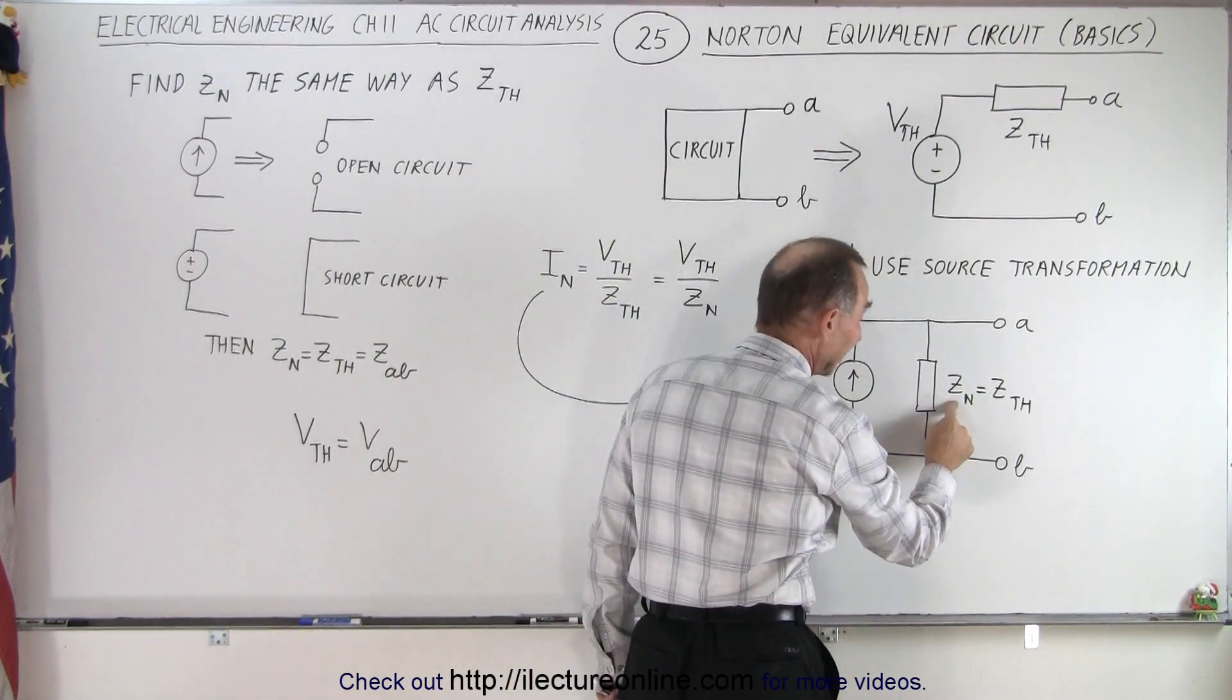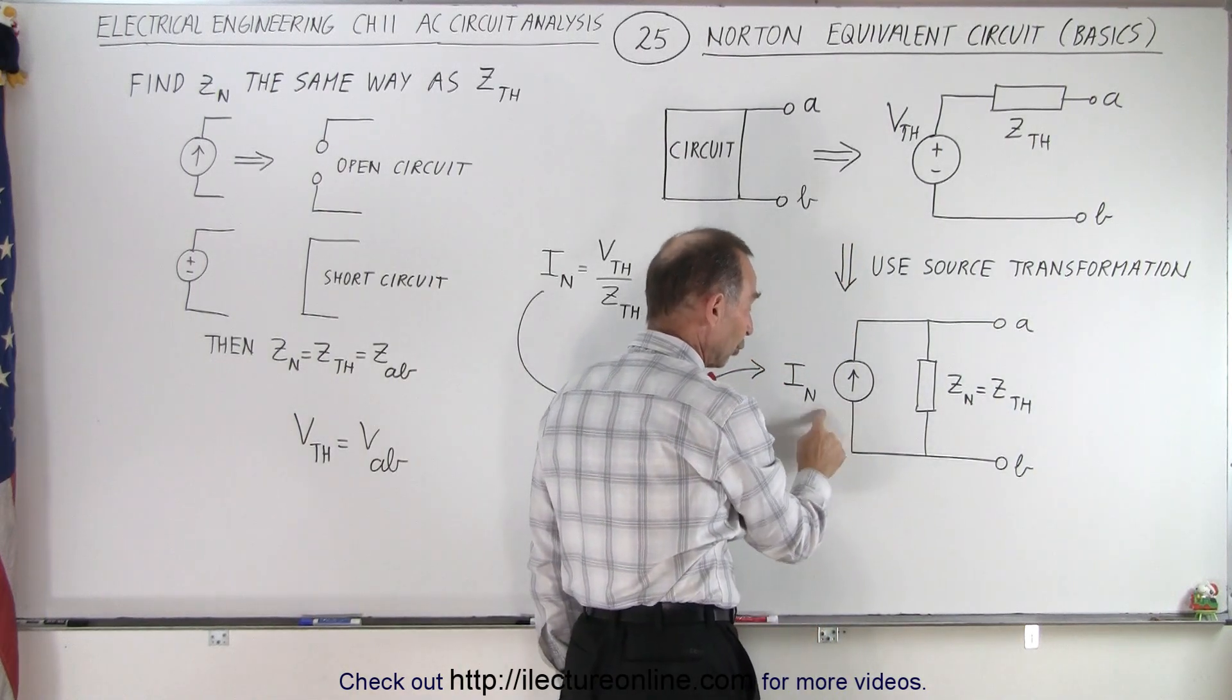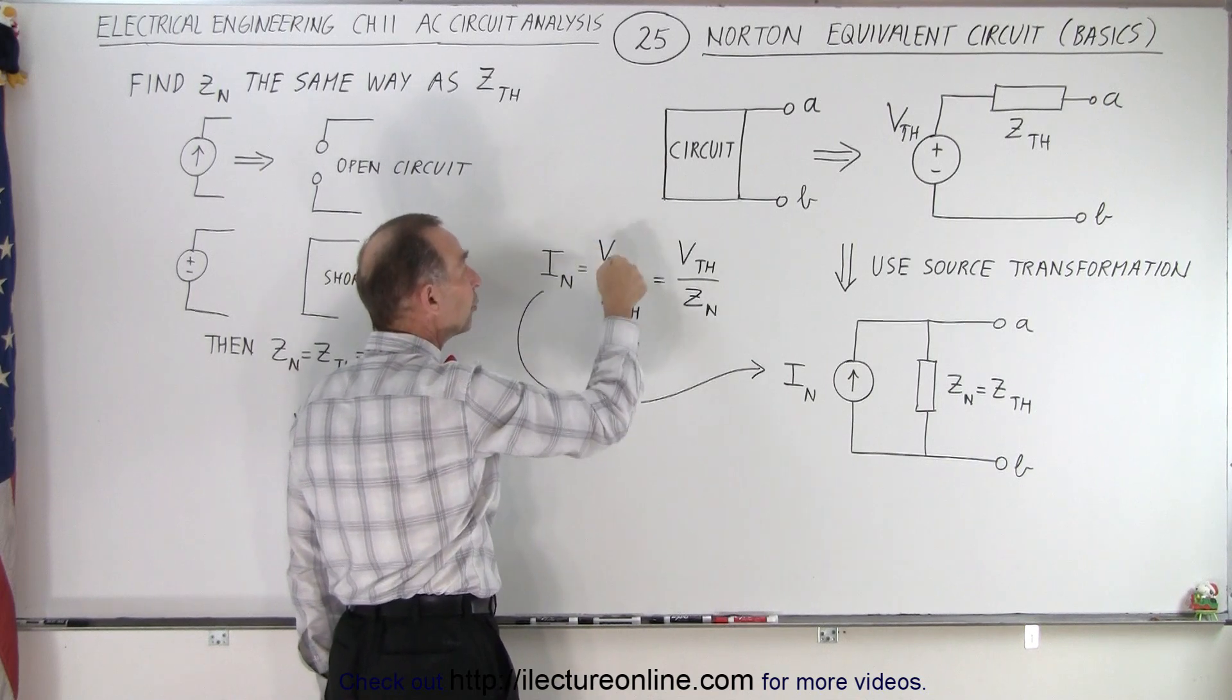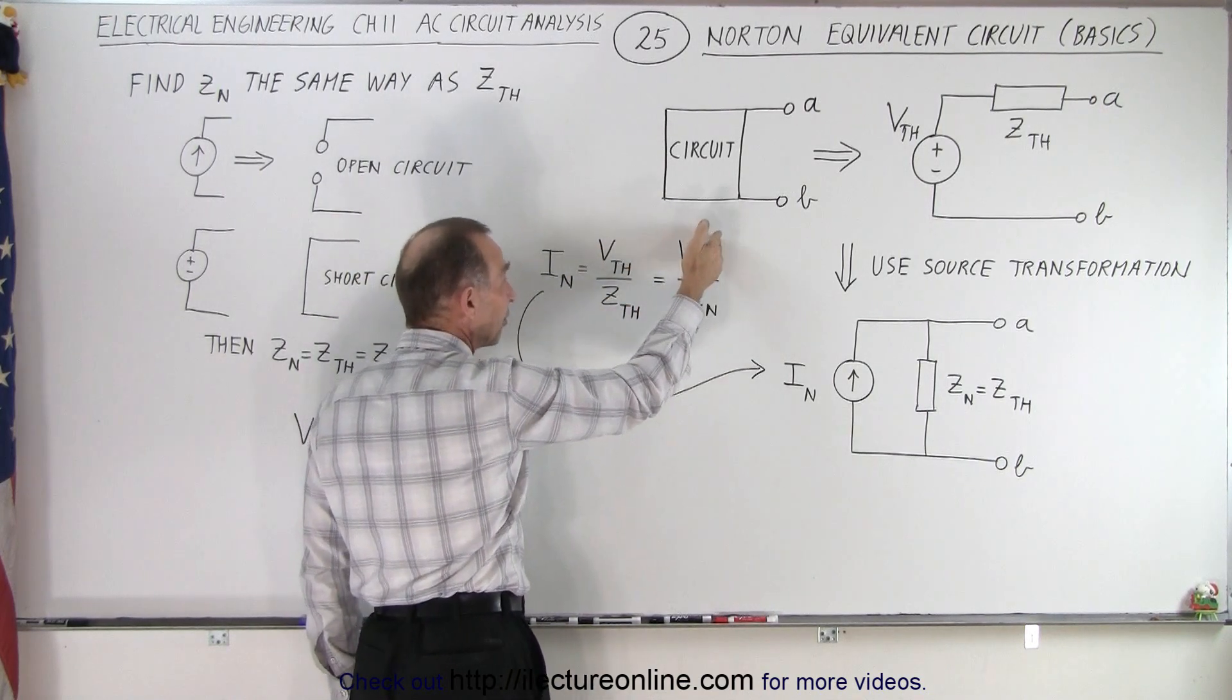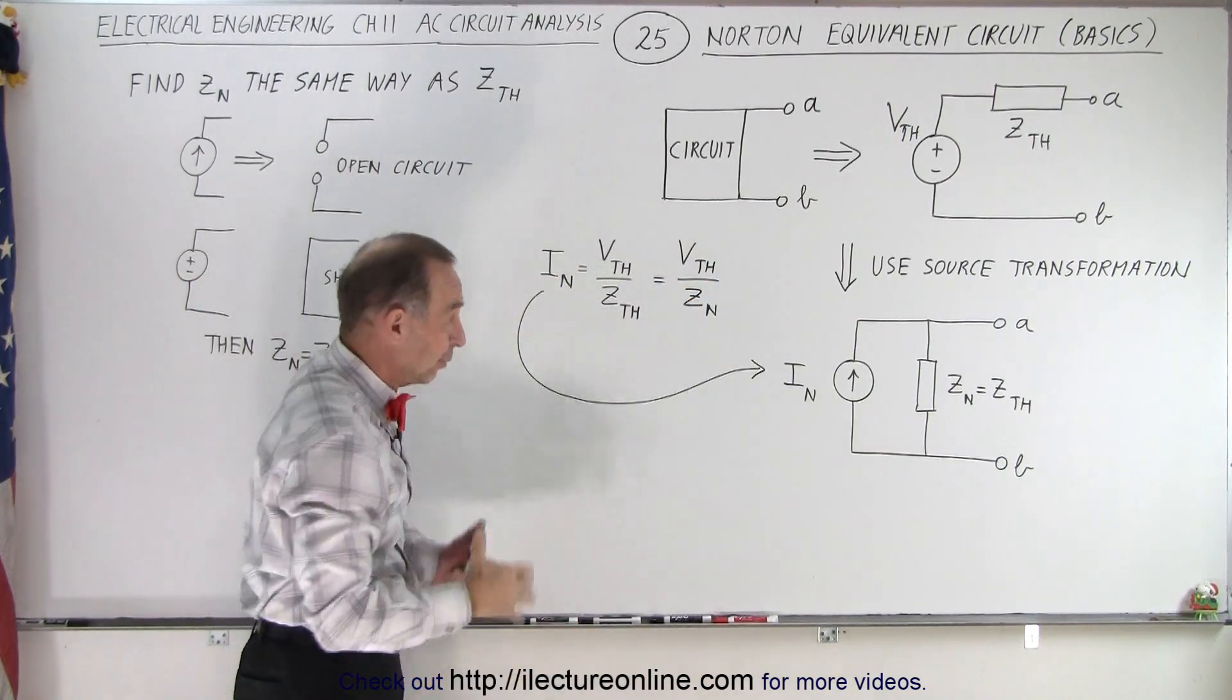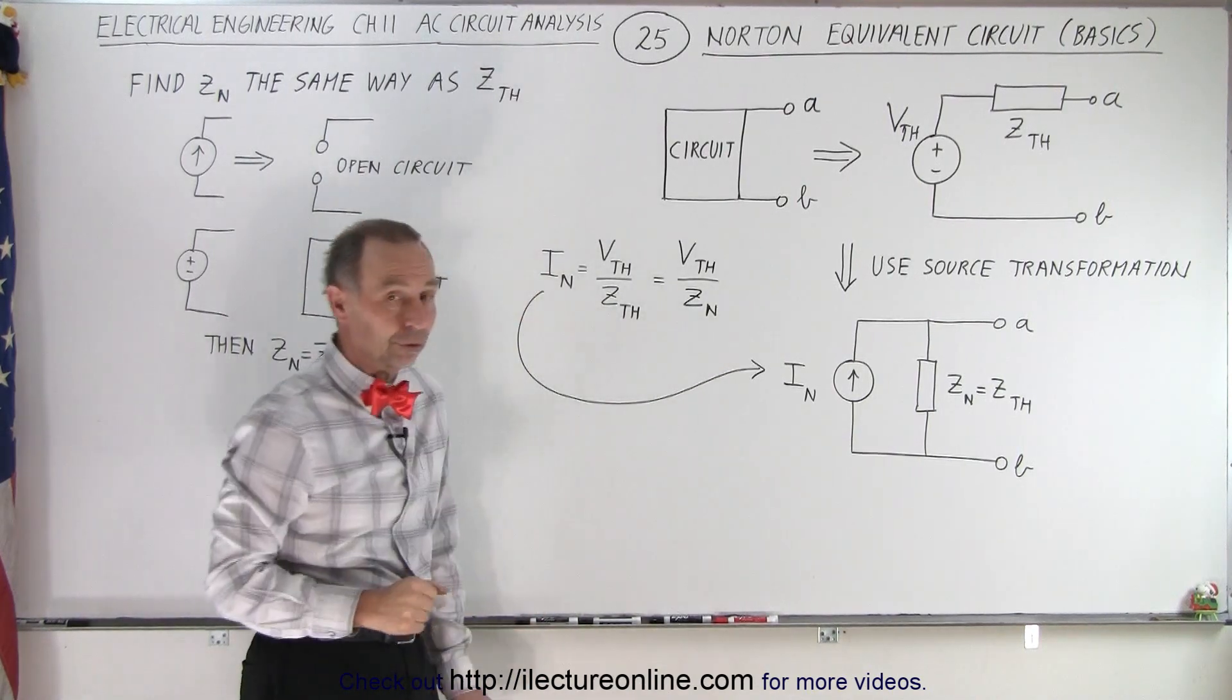So essentially, the Norton impedance is exactly the same as the Thevenin impedance. And to find the Norton current, all we have to do is take the Thevenin voltage divided by the Thevenin impedance, which is the same as taking the Thevenin voltage divided by the Norton impedance, since the Thevenin impedance and Norton impedance are exactly the same thing, and you have the Norton current.